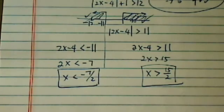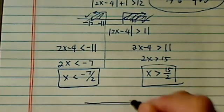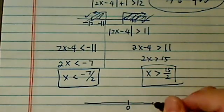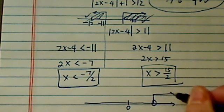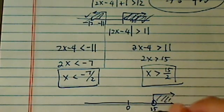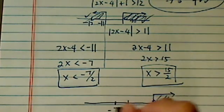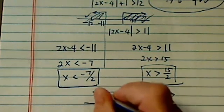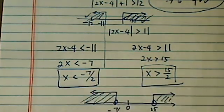That's the second solution. And if you have to on the test graph it, this one is 15 over 2, little over 7, not including. And then this one is minus 7 over 2, little over minus 3. So here is your solution.